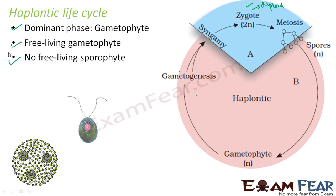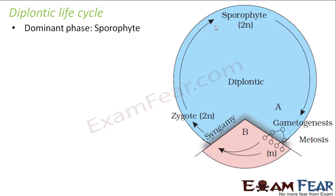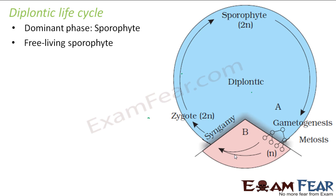In a diplontic life cycle, the dominant phase is the sporophyte. This is seen in vascular plants — gymnosperms and angiosperms. The plant we actually see is the sporophyte. This sporophyte gives spores, which germinate to form the gametophyte, and the gametophyte produces gametes that fuse to form a zygote. The gametophyte phase here is very short-lived. The sporophyte is free-living and not dependent on anything, but the gametophyte is not free-living.